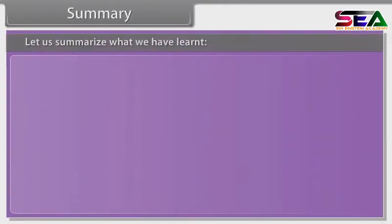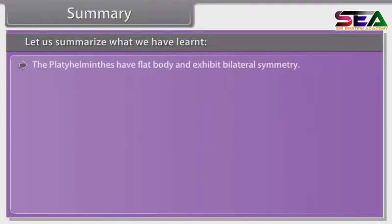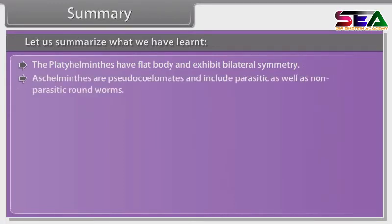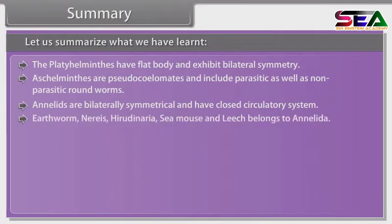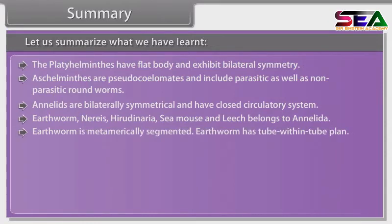Summary. Platyhelminthes have a flat body and exhibit bilateral symmetry. Aschelminthes are pseudocoelomates and include parasitic as well as non-parasitic roundworms. Annelids are bilaterally symmetrical and have a closed circulatory system. Earthworms, Nereis, Hirudinaria, sea mouse and leech belong to Annelida. Earthworm is metamerically segmented and has a tube-within-tube body plan.